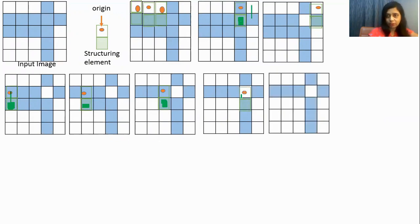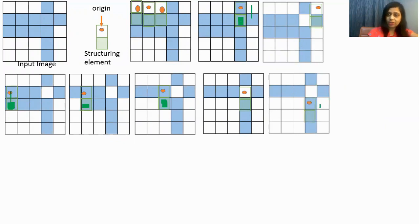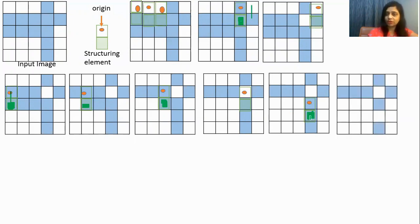The image will remain the same. Moving to the next position — when we go to this position there is overlapping, but there is no blue pixel out here, so there is no change in the image. At the next position again there is overlapping between origin and blue, and we will remove this blue pixel. This is the output of erosion.